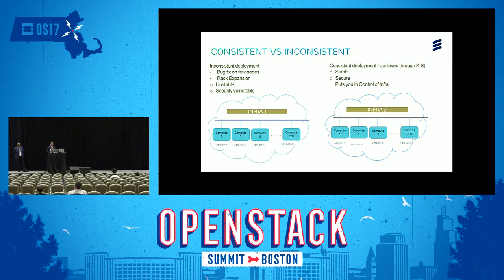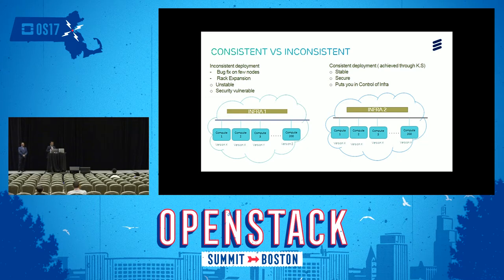There may also be scenarios where, as part of continuous integration and continuous deployment, new racks are added to an existing deployment. For example, if a new rack is added with 40 or 50 compute nodes, it may be possible that important updates are missed in the newly added computes. This can also cause inconsistency in the network, and these kinds of deployments are unstable and more security vulnerable.